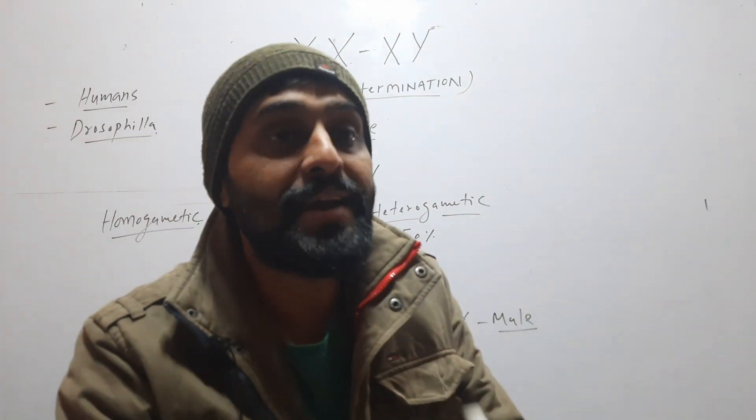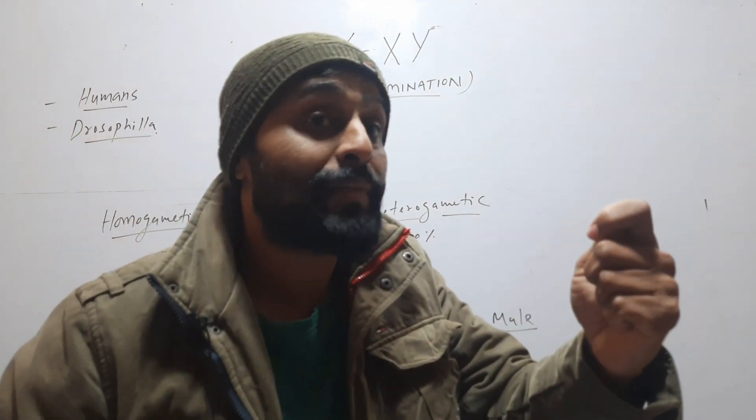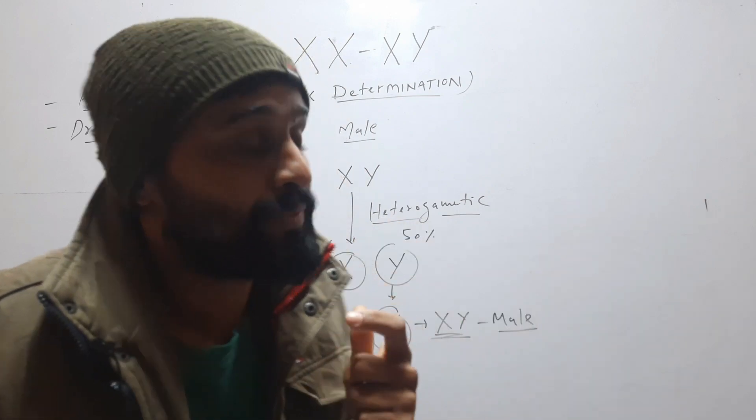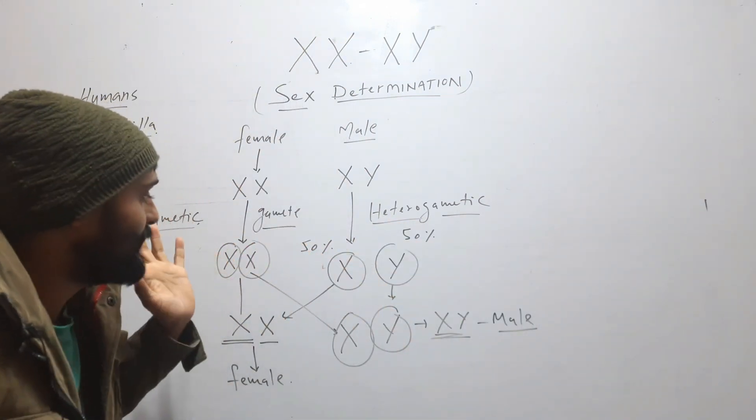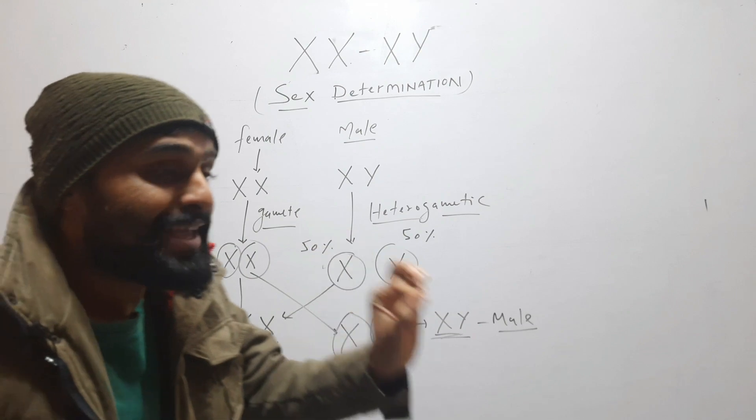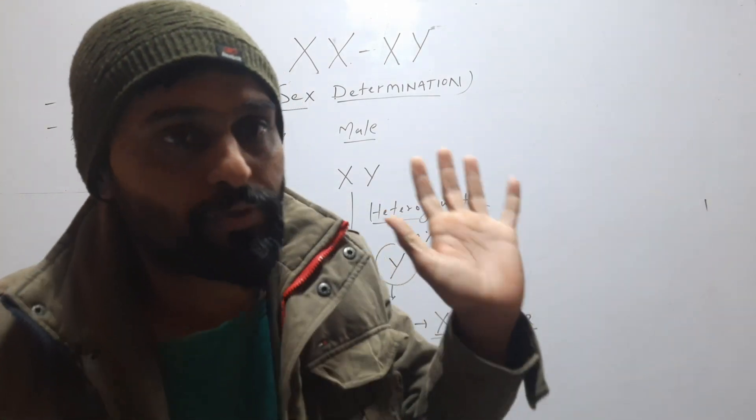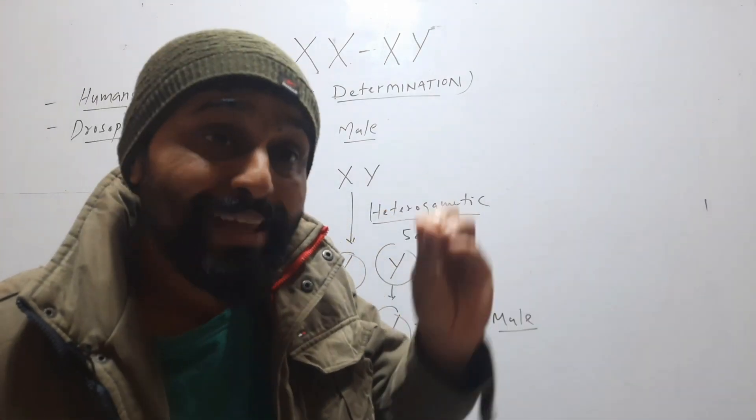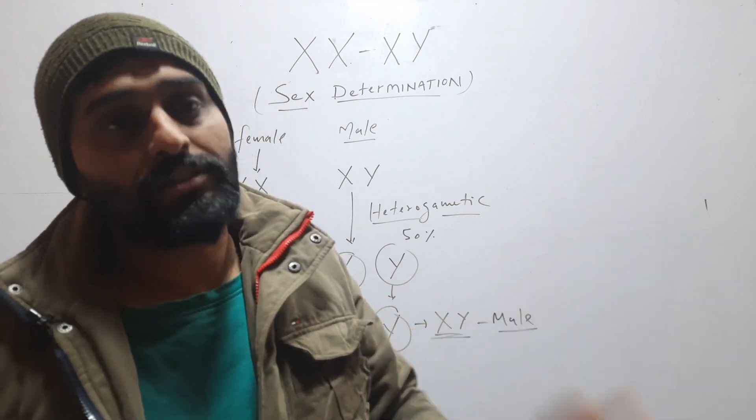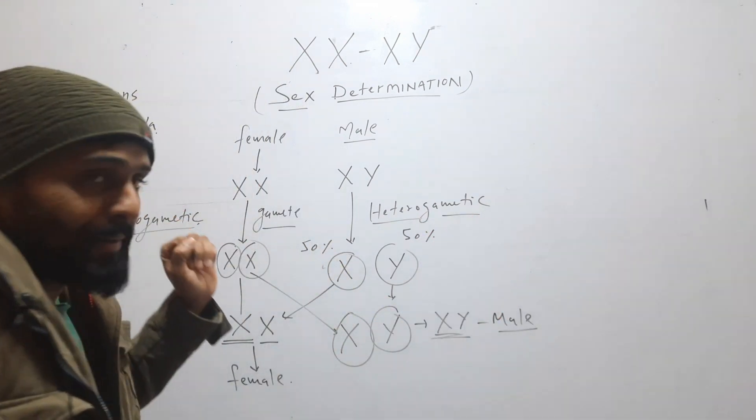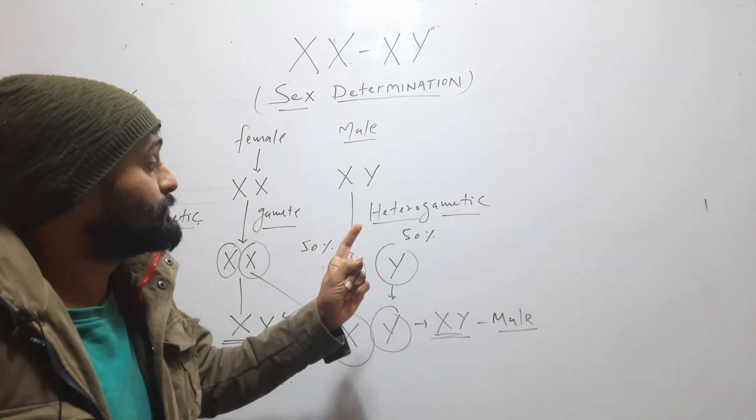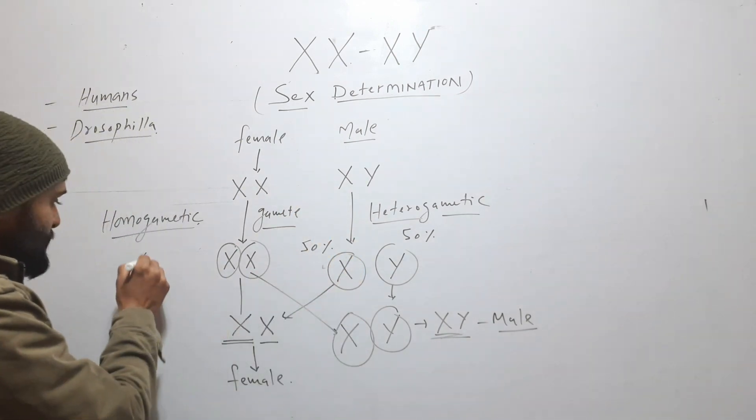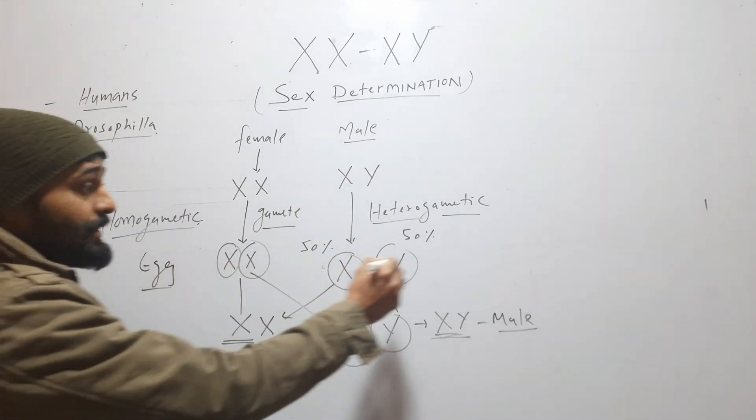So whose gamete is deciding the sex of the organism? In the case of female, you can see that female will always give X chromosome. Egg of female will always have X chromosome because female is homogametic. But the sperm—here this is egg, these are sperm.